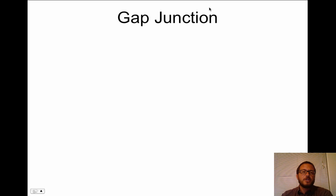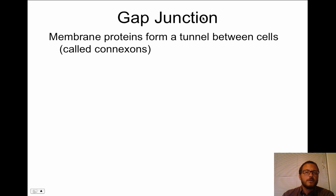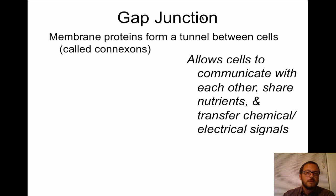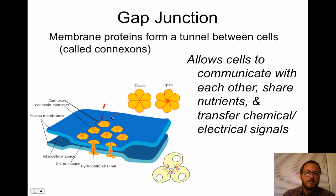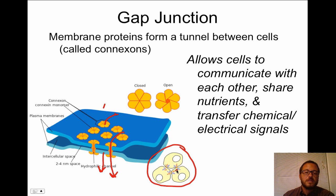The last junction is called a gap junction. Membrane proteins called connexins form a tunnel between cells, allowing cells to communicate with each other, share nutrients, and transfer chemical and electrical signals. Anything on one side of the cell can travel through these gaps and come out the other side. Gap junctions are especially important in cardiac muscle, particularly in intercalated discs, allowing neighboring cells to communicate.